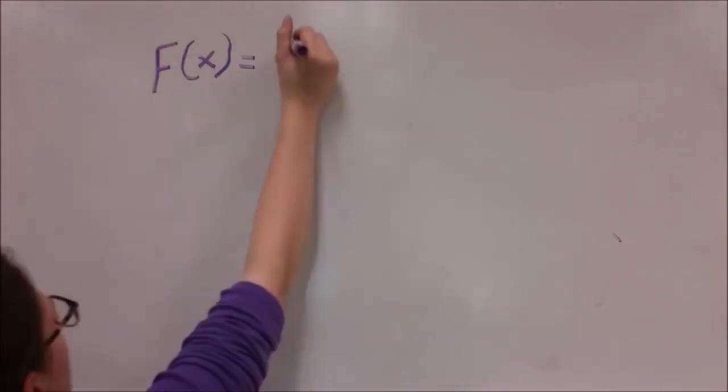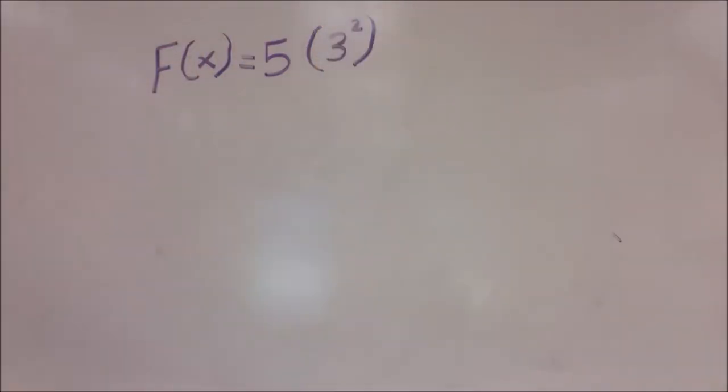Here's an example of how I work. Say we have f of x of 3 squared. The first thing we would do is simplify the exponent. That means we would multiply 3 by itself to come up with 9. Now our function reads f of x, 5 of 9. All we have to do now is multiply 5 by 9 to get f of x equals 45.